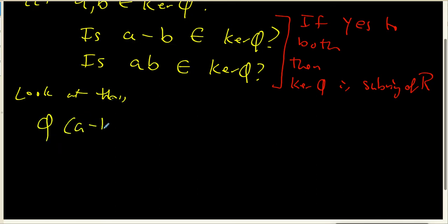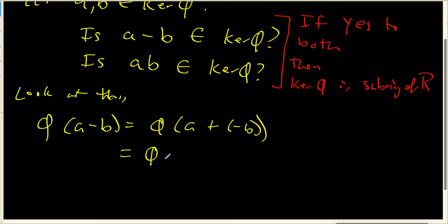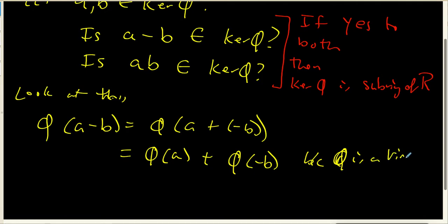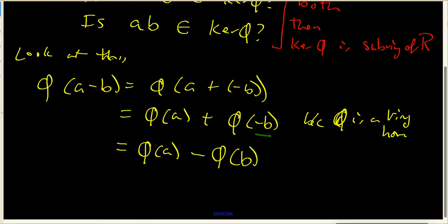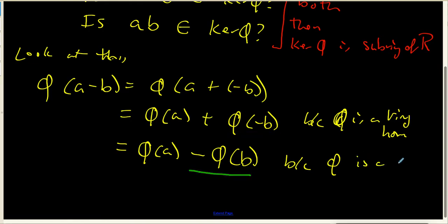If I look at phi of A minus B, that equals phi of A plus minus B, because that's what minus B means inside a ring. Because phi is a ring homomorphism, this equals phi of A plus phi of minus B. We also know that phi takes additive inverses in R to additive inverses in S — in other words, phi of minus B equals minus phi of B. This is also because phi is a ring homomorphism.